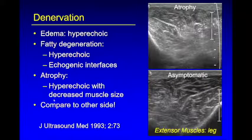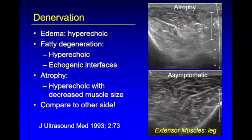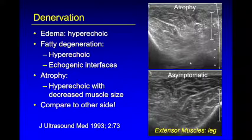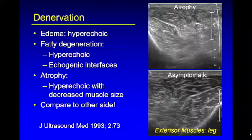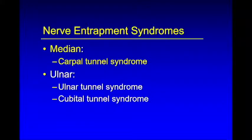With more chronic cases, you'll have atrophy — the muscle will be decreased in size and echogenic. An important thing is to compare to the other side. When I put my transducer over an echogenic muscle, the first instinct is to reach for the gain and turn it down to make it look normal. If you do that, you won't pick up the abnormality. So I go to the asymptomatic side, optimize my gain, and then go to the other side at the same level to look for atrophy and denervation.